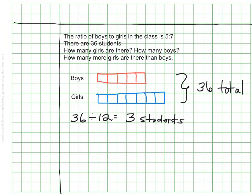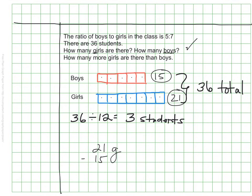To answer the questions — how many girls are there and how many boys are there? — the boys count up as 3, 6, 9, 12, and 15. For the girls we'd have 3, 6, 9, 12, 15, 18, and 21. A quick check tells us that 15 plus 21 makes our 36 total. There's another part: how many more girls are there than boys? If there are 21 girls and 15 boys, subtracting gives us six more girls than boys.